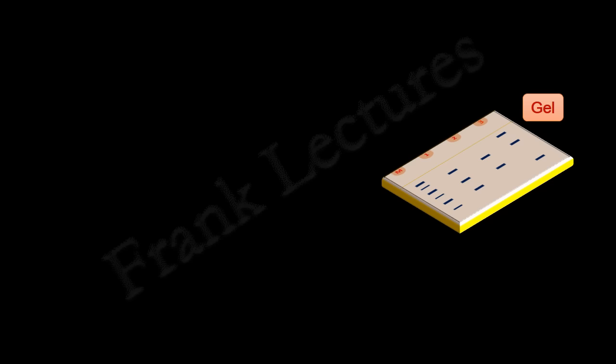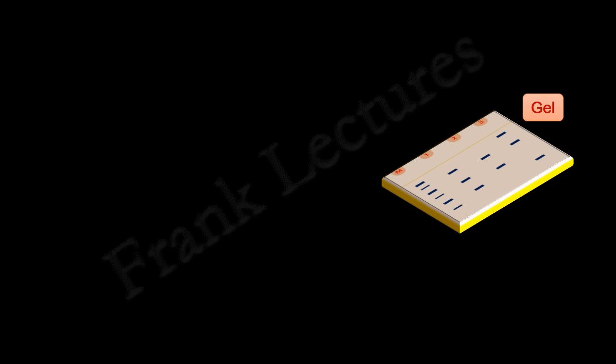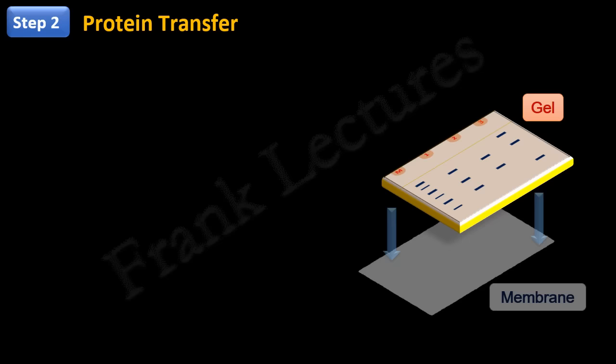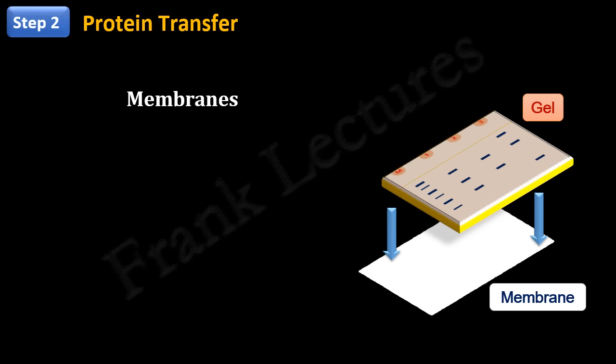Once proteins have been separated by SDS-PAGE, next step is to transfer these proteins from the gel to a suitable membrane. The membranes used in Western blotting are those having high affinity for proteins. They have excellent protein binding and retention capabilities.